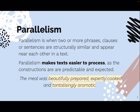Parallelism is when two or more phrases, clauses, or sentences are structurally very similar and appear next to each other in a text. It makes texts easier to process because the constructions are predictable. For example: 'The meal was beautifully prepared, expertly cooked, and tantalizingly aromatic.' Each element follows the pattern of adverb plus verb or adjective, giving the reader a clear sense of pattern that makes it easier to understand.